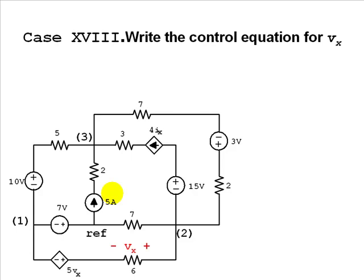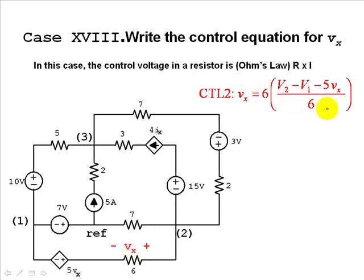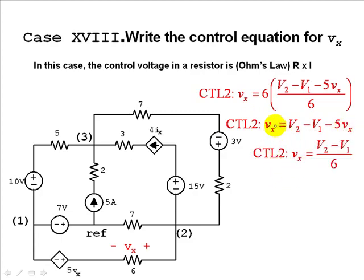Case 18: the controlling variable Vx is the voltage across this 6-ohm resistor. We use Ohm's law: 6 ohms times the current that flows from high to low, from right to left. This is still an RV branch. The current flowing to the left is V2 minus V1 minus 5Vx, divided by 6. That voltage equals that current multiplied by 6 ohms. You can rearrange to solve for Vx explicitly, but leaving it as-is is sufficient — your calculator will handle the rest.